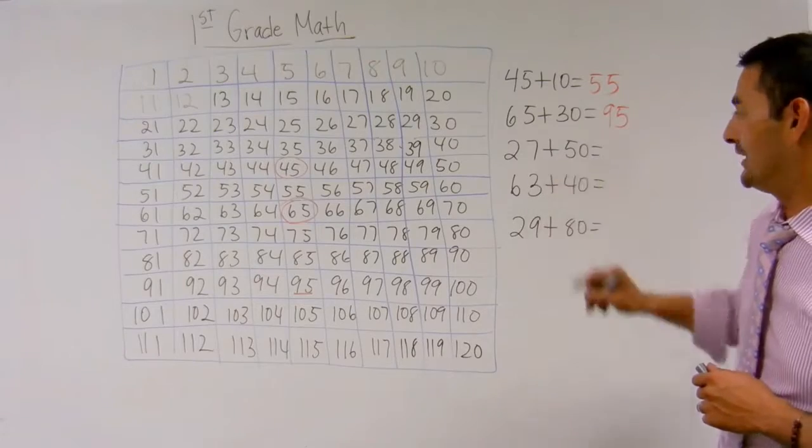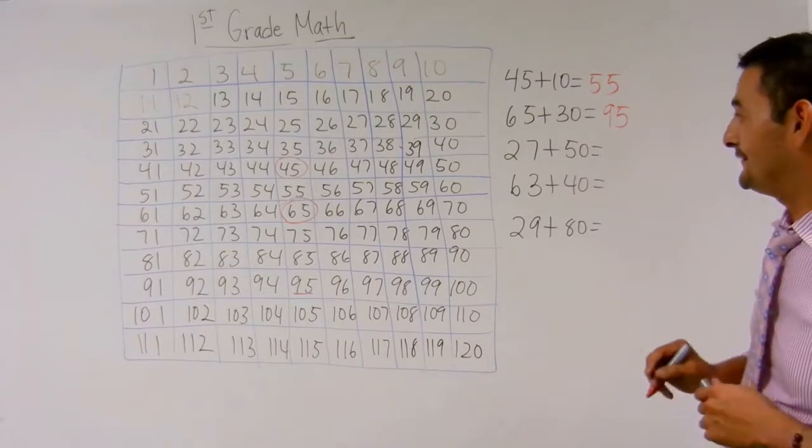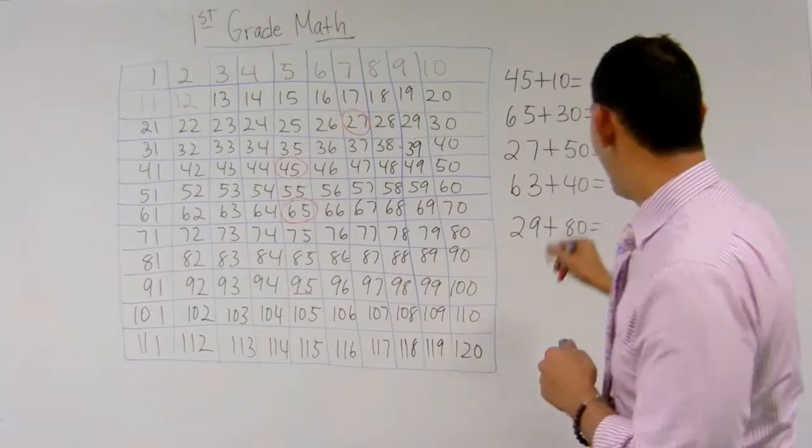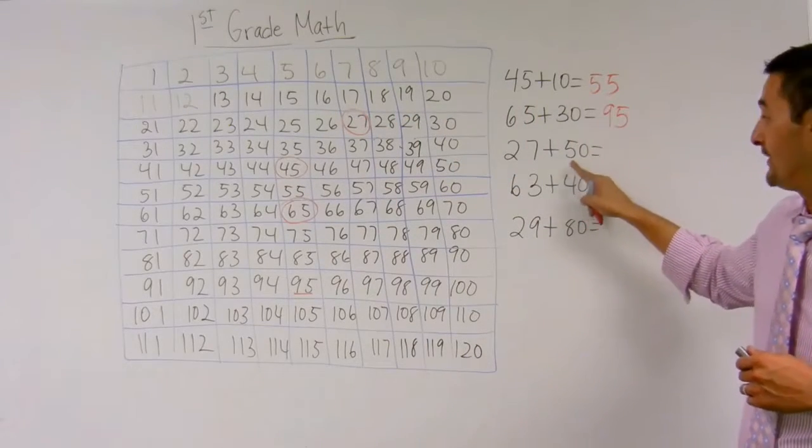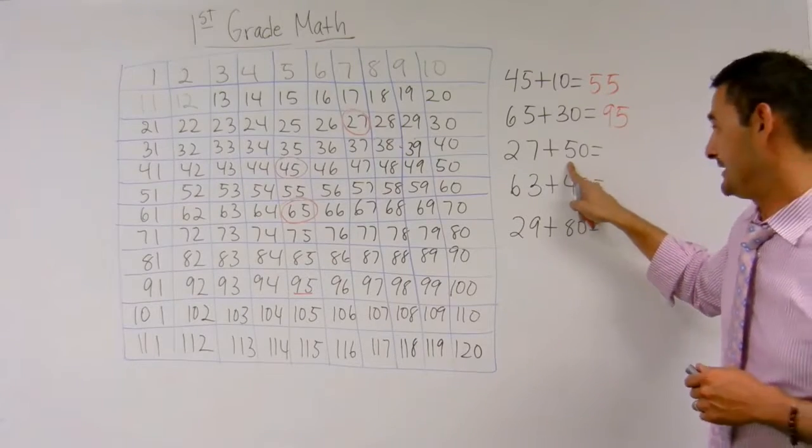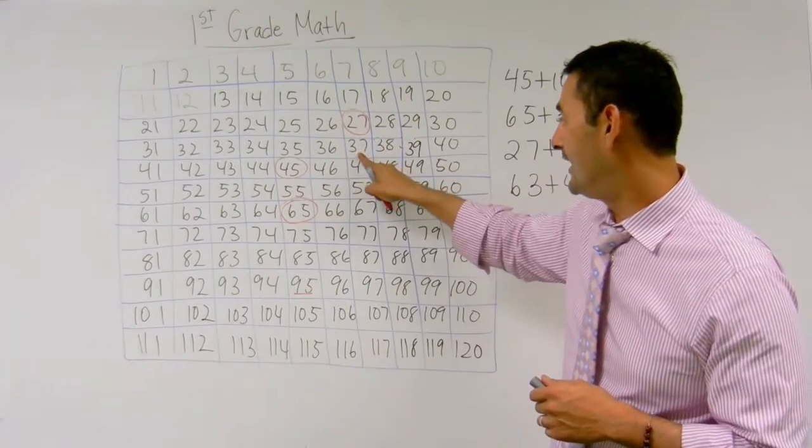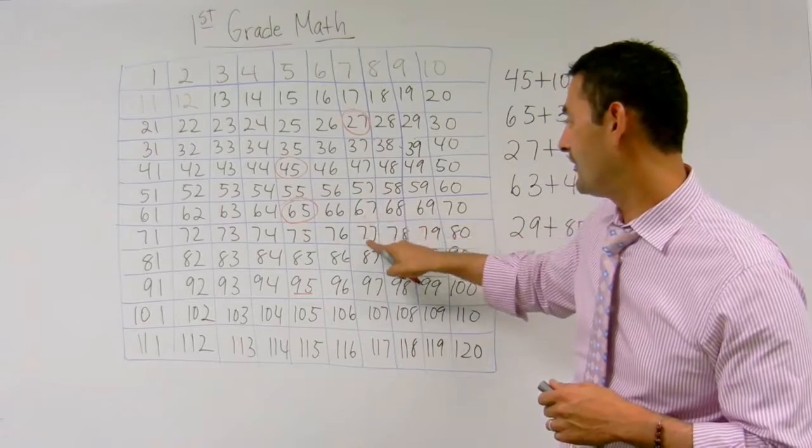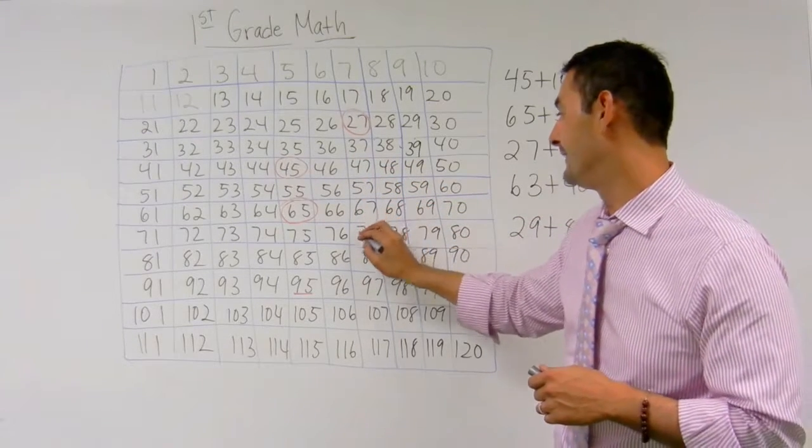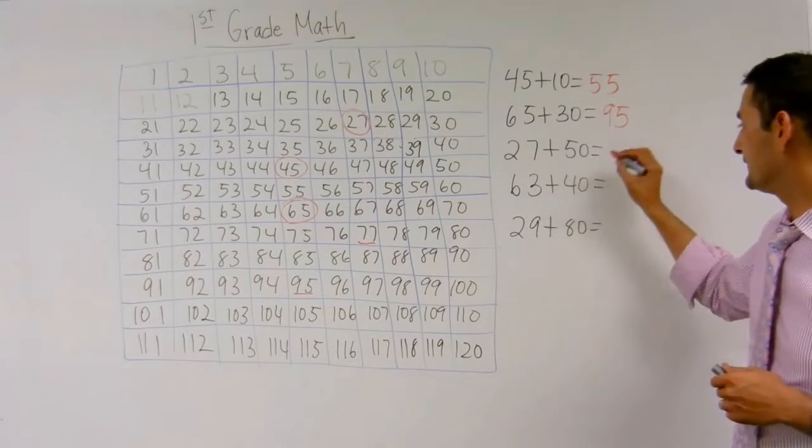Now let's take a look at this one, 27 plus 50. We're going to go to our number line, we're going to circle 27, and we're going to add 50. So we've got five tens, we're going to move down how many times? Five times, that's right. So 27 plus 50 is 77.